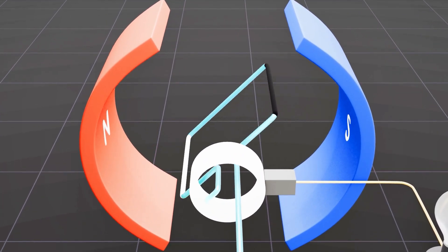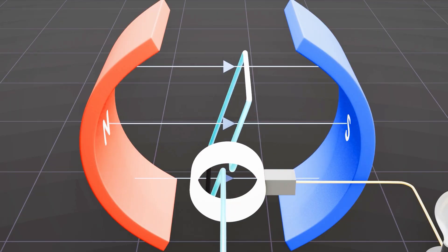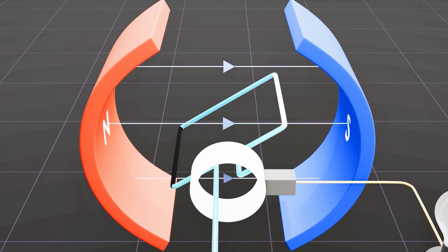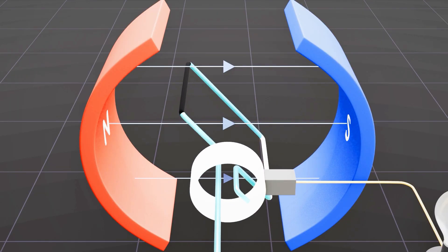This causes it to rotate in a clockwise direction within a magnetic field generated by a permanent magnet. As the coil moves through the magnetic field, it creates an electric current.